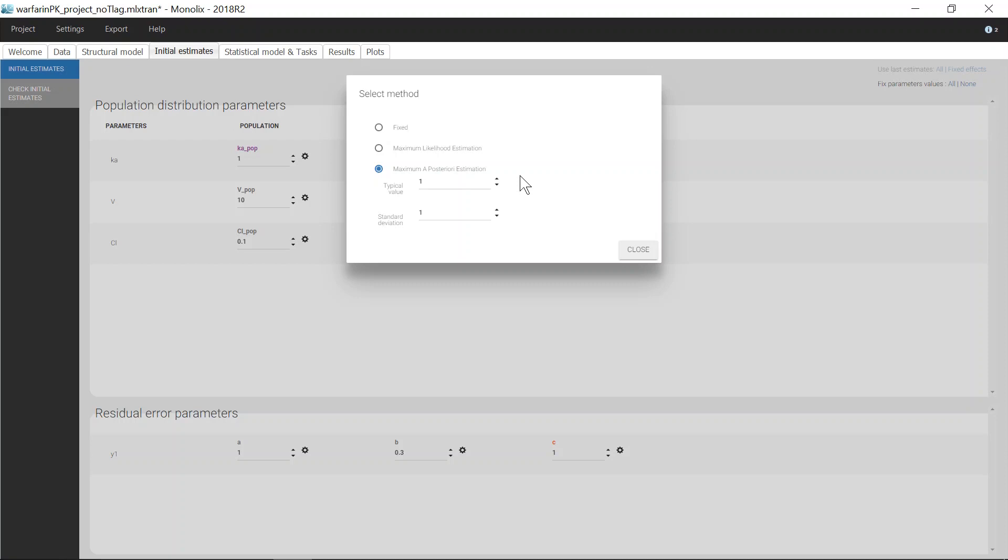This allows me to define a prior distribution for Ka-pop, which is the same type of distribution as the one used for the parameter, so log normal here. With the prior value as the typical value, and the standard deviation of the transform parameter that represents the certainty of this prior information, and directly impacts the weight that it will have in the estimation.